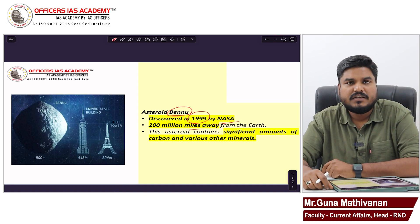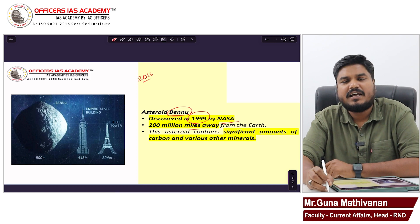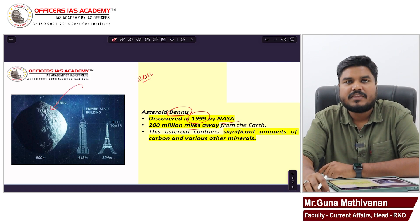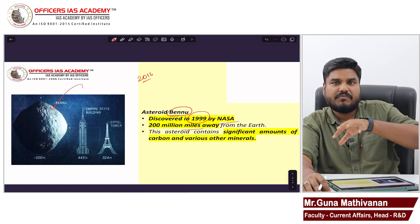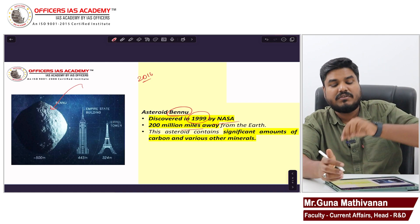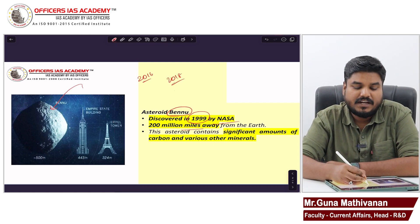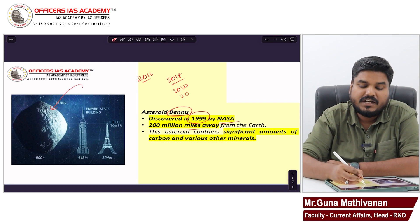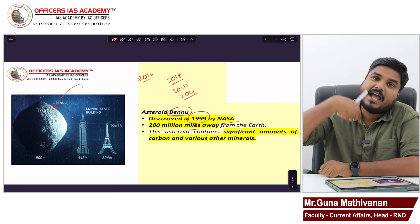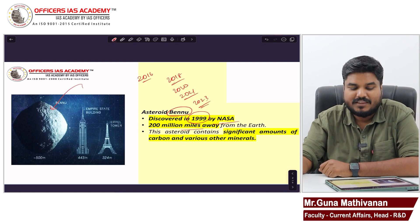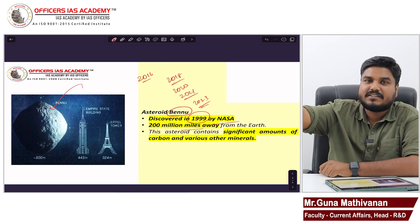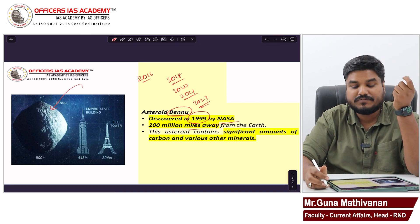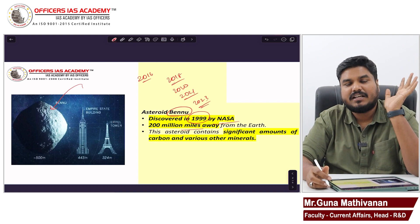In 2016, NASA sent a space mission to Asteroid Bennu. The spacecraft landed on this asteroid in 2018, collected samples in 2020, and in 2021 it started the journey back to Earth. In 2023, the samples collected from Bennu reached Earth — that is why this mission was in the news.